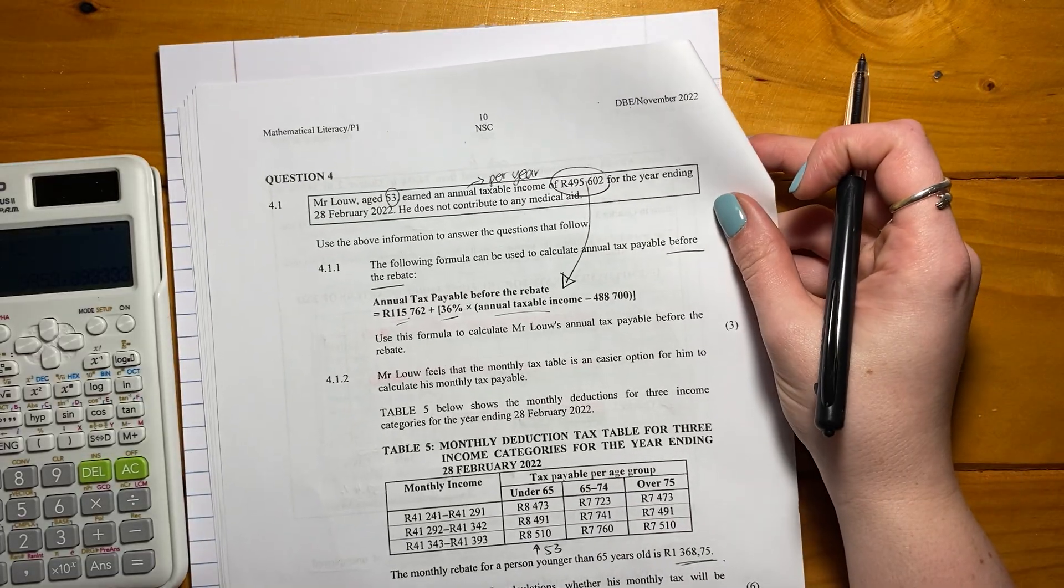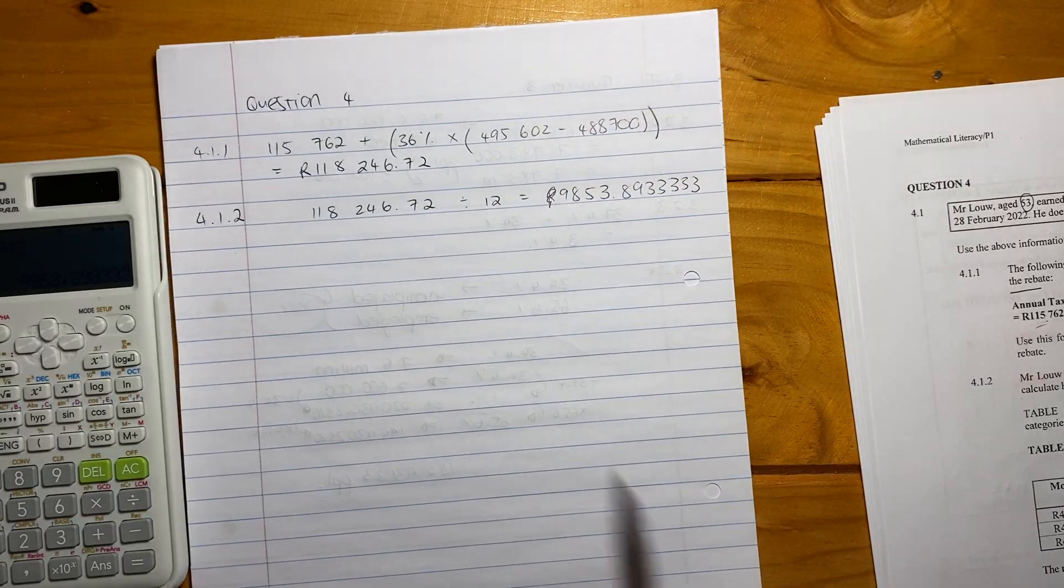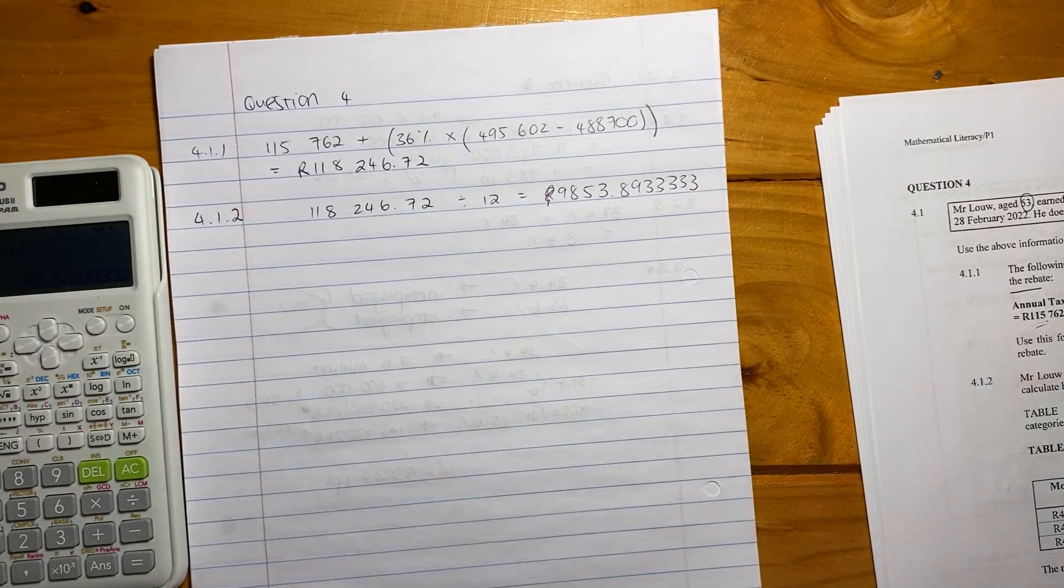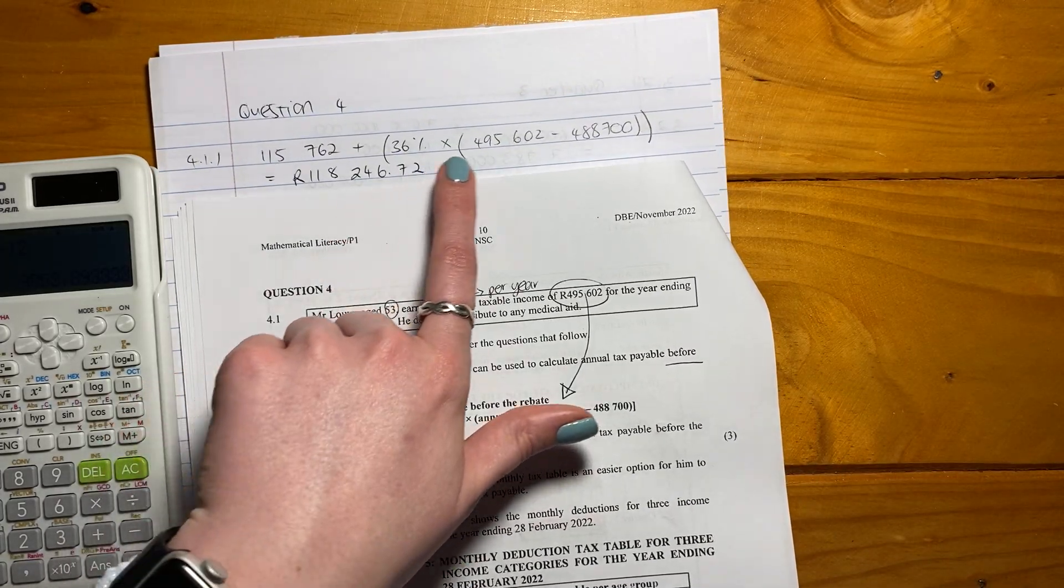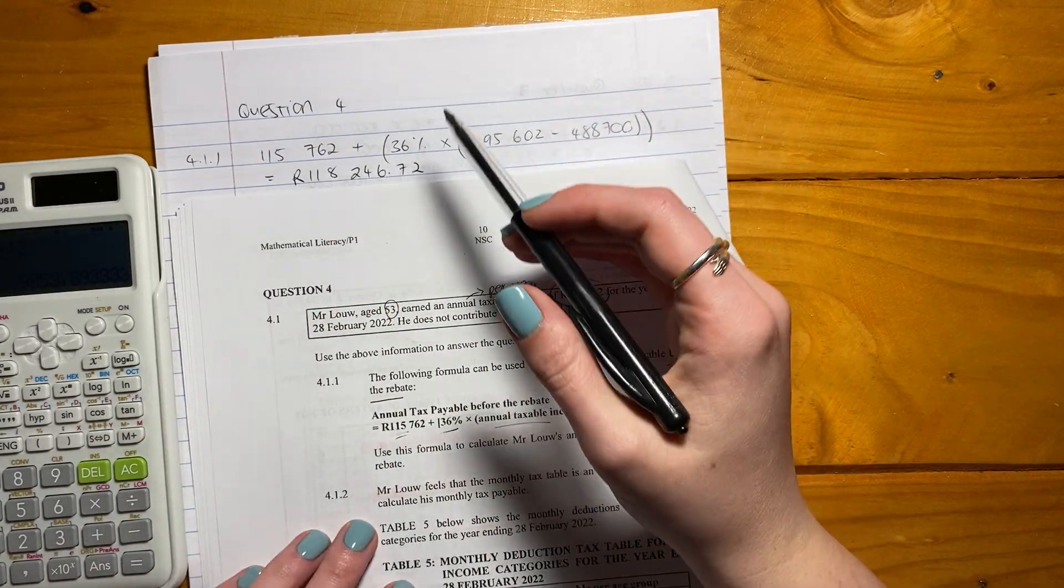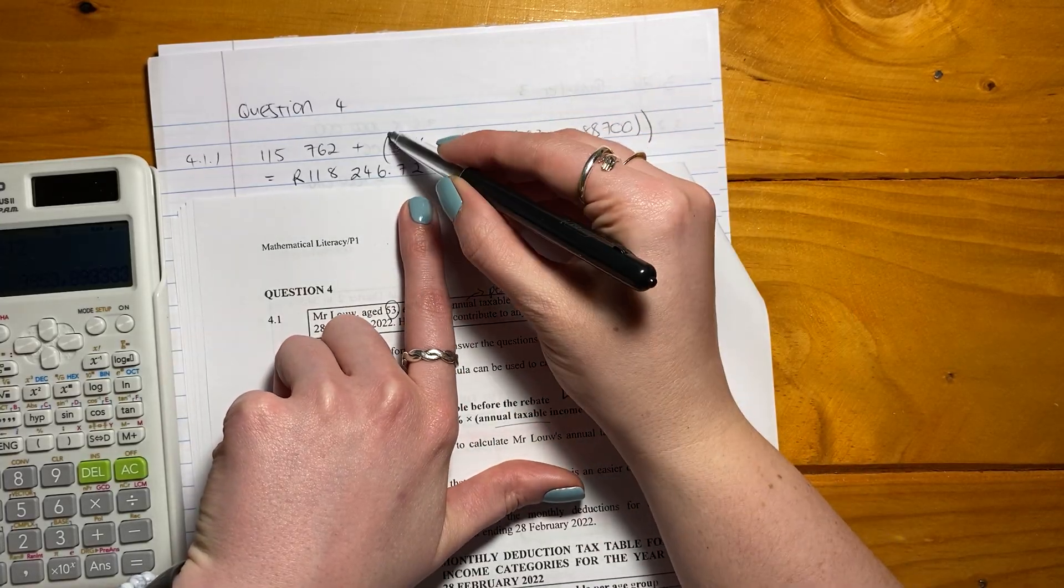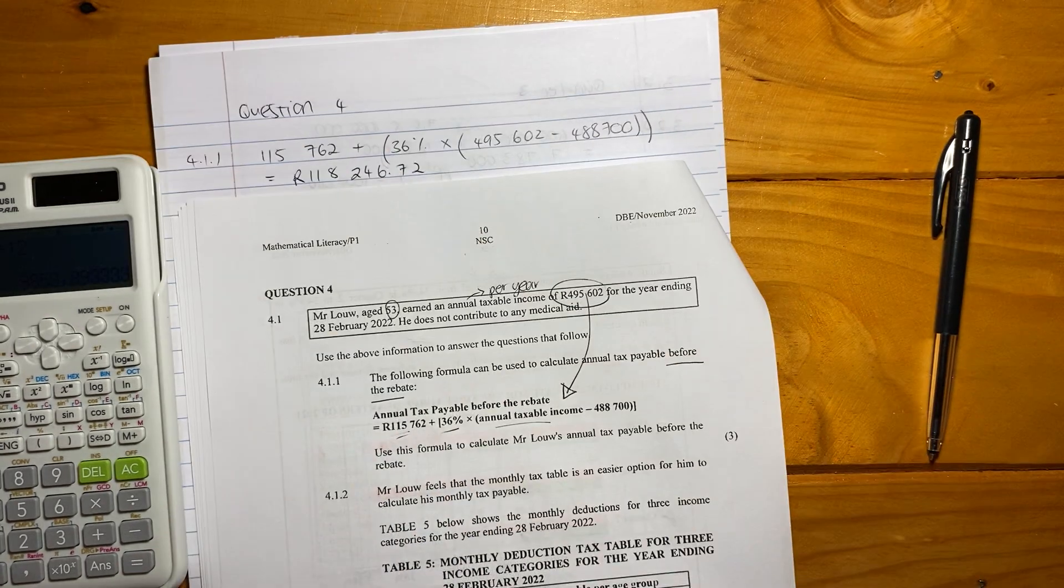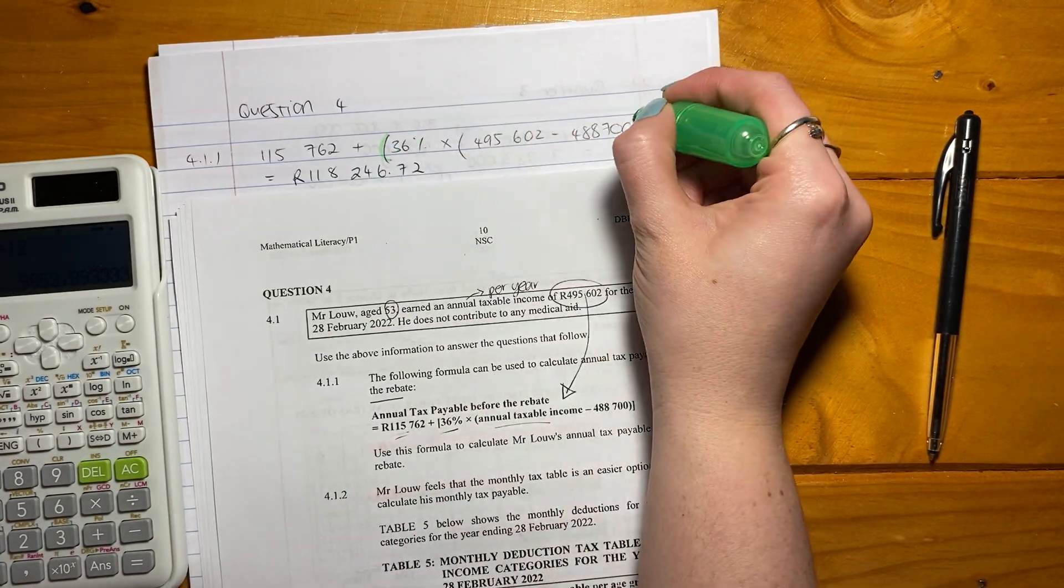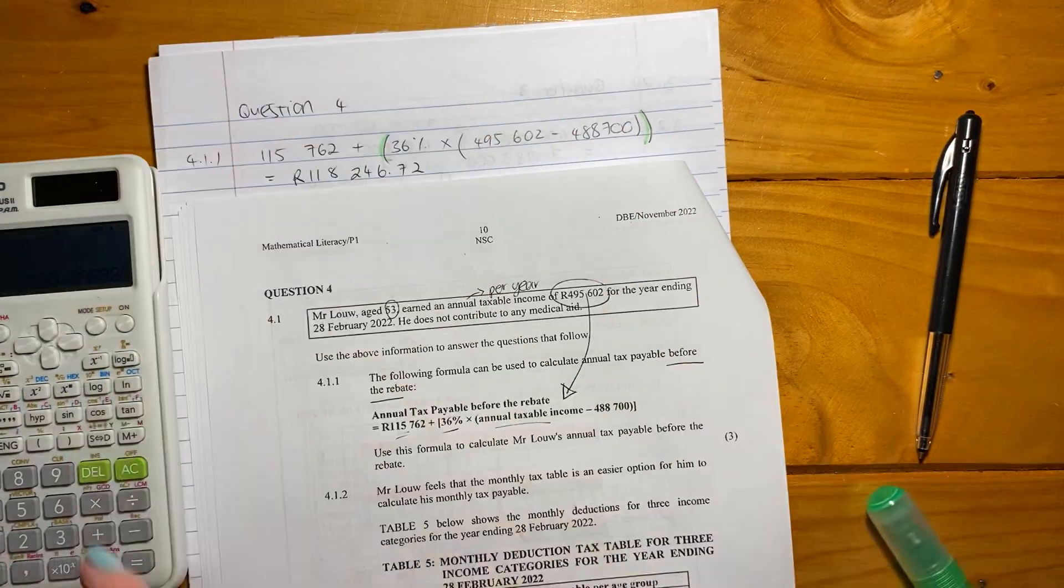So here, quite simple because they've given us the whole formula. All we need to do is go plug in his annual taxable income, which they've given us over here, and we're done. So not a difficult thing to do. So I'm just going to, I did write this out. So we just literally plug in. So 115762, this is all from this formula here. You plug that in. A very important thing here, and this is what students get incorrect, is please take note of the brackets.